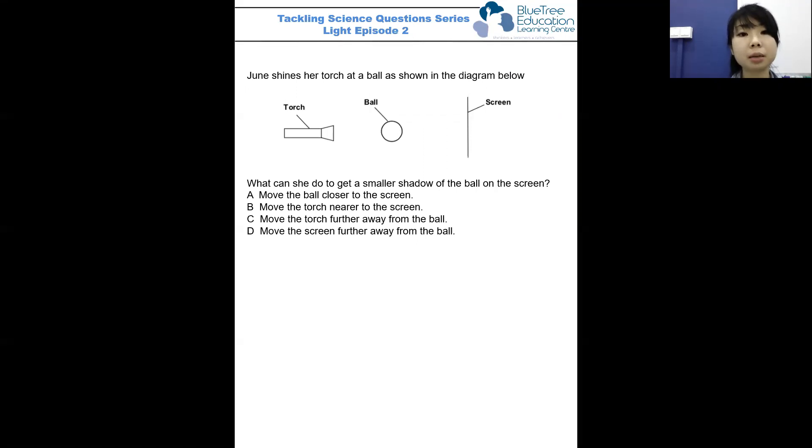Jun shines her torch at a ball as shown in the diagram below. This is the setup. What can she do to get a smaller shadow of the ball on the screen? This is not difficult, but we will go through how we get larger or smaller shadows.